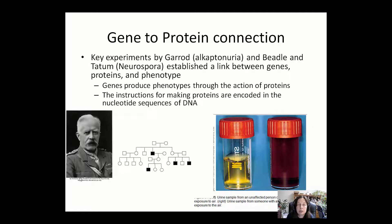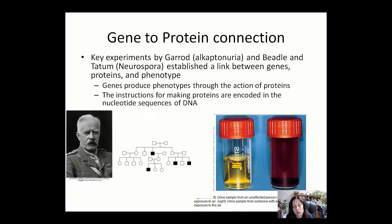Garrod was familiar with the work of Gregor Mendel on units of inheritance and began to see an inheritance pattern. He realized it was an autosomal inheritance pattern — the disease skipped a generation, and you needed to inherit at least two copies of a mutant gene to get the disease. At the time he didn't know about genes, but he noted it was a heritable trait connected to units of inheritance.